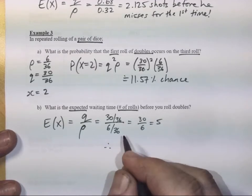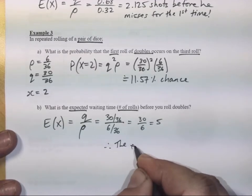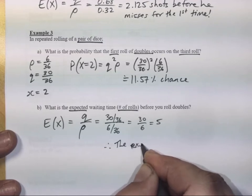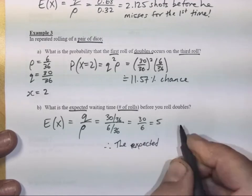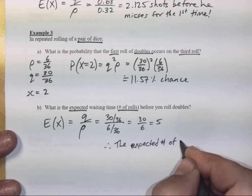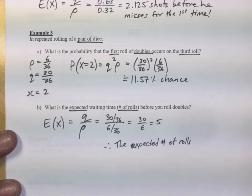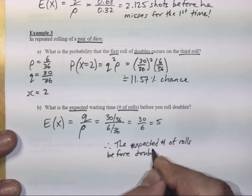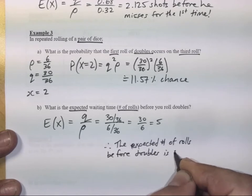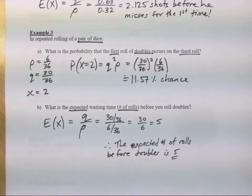Therefore, on average, the expected number of rolls before doubles is 5, on average. That means we'd have to roll 5 times in a row, and then we'd probably see our first doubles on the sixth roll, on average.